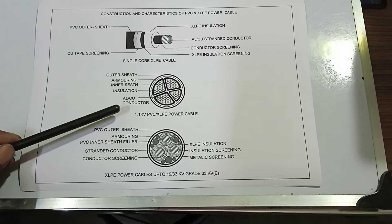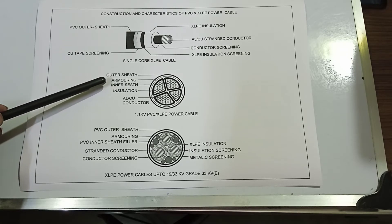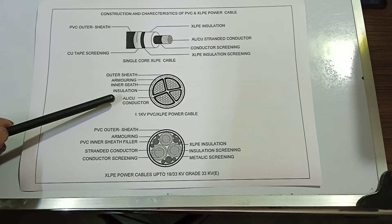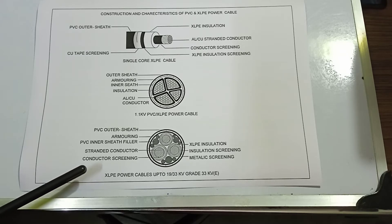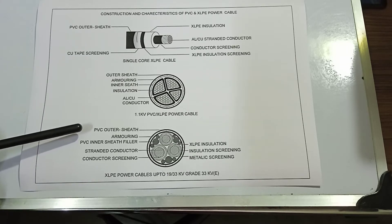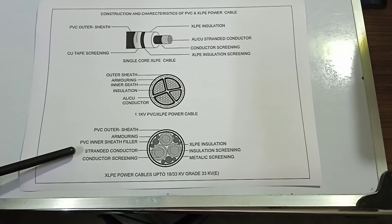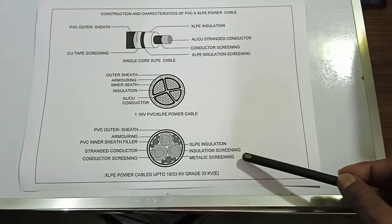Here is a 1.1 kV PVC or XLPE cable cross-sectional view. There is an outer sheath, next is armoring, next is inner sheath, next is insulation, and next is an aluminium or copper conductor. Here is XLPE power cables up to 19/33 kV grade — a 33 kV earth systems cable — with PVC outer sheath, armoring, PVC inner sheath, filler, stranded conductor, conductor screening, XLPE insulation, insulation screening, and metallic screening.